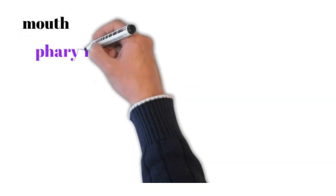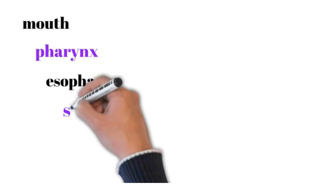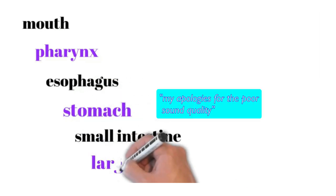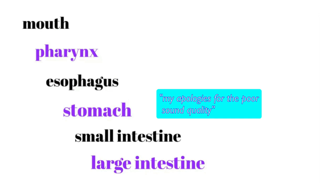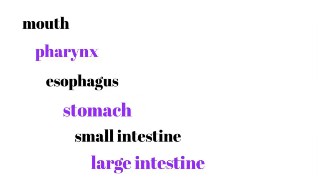Let's talk about the different regions of the digestive tract. Sometimes this is referred to as the GI tract or gastrointestinal tract, which is somewhat of an incomplete term because gastrointestinal really refers just to the stomach and the small and large intestines. But this whole process is certainly beginning in the oral cavity or the mouth, moving on to the pharynx, esophagus, stomach, the different regions of the small intestine — duodenum, jejunum, and ileum — and the different regions of the large intestine: cecum, ascending colon, transverse colon, descending colon, sigmoid colon, rectum, and the anus.